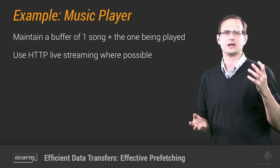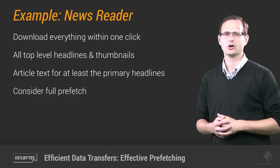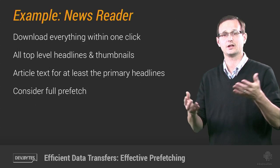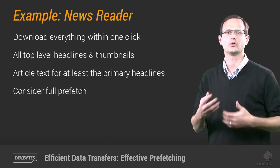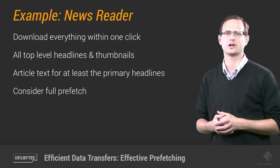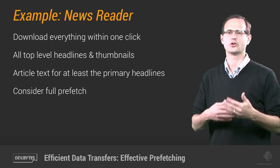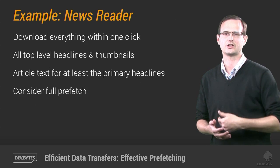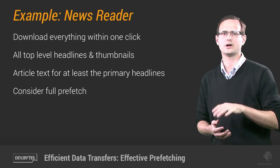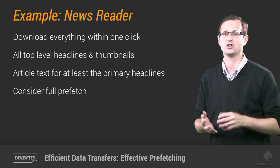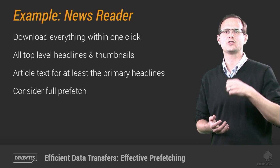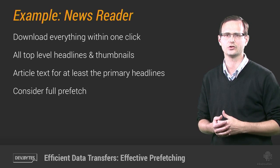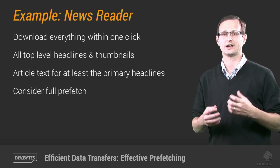If we look at something like a news app, things get a little more complicated. A typical use case for a music player is to find an album or playlist, hit play, and then listen — so you have a really good chance of knowing what's coming next. In contrast, the browsing path when using a news reader is much less predictable, with readers potentially swiping between dozens of different categories and jumping between hundreds of articles. In many ways, a news reader behaves a lot like a browser.